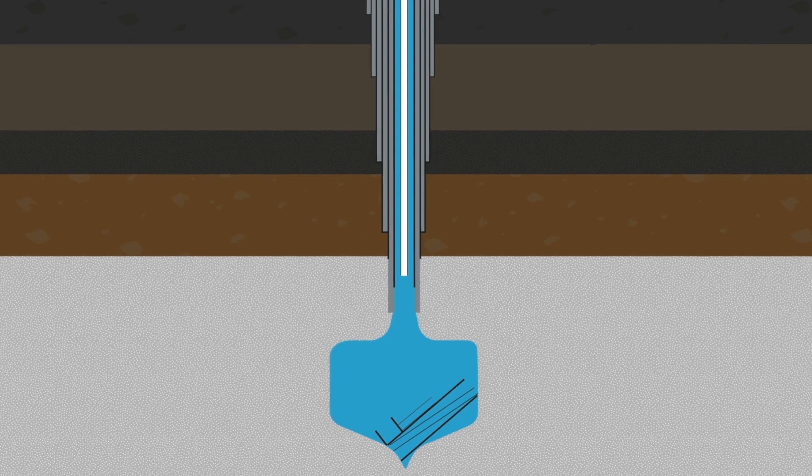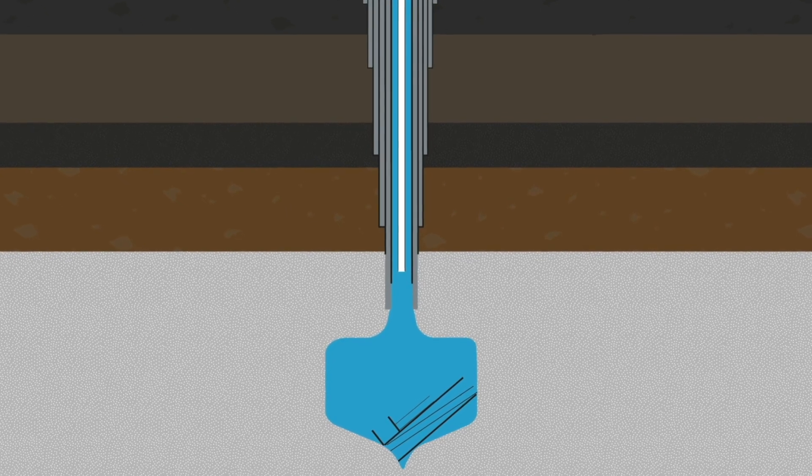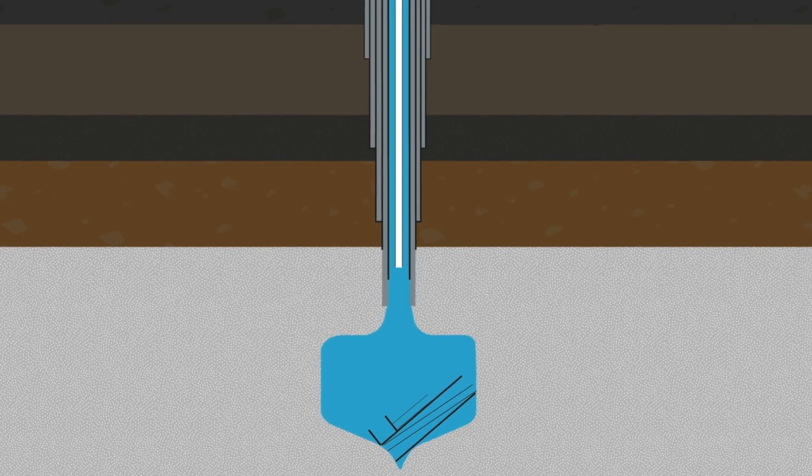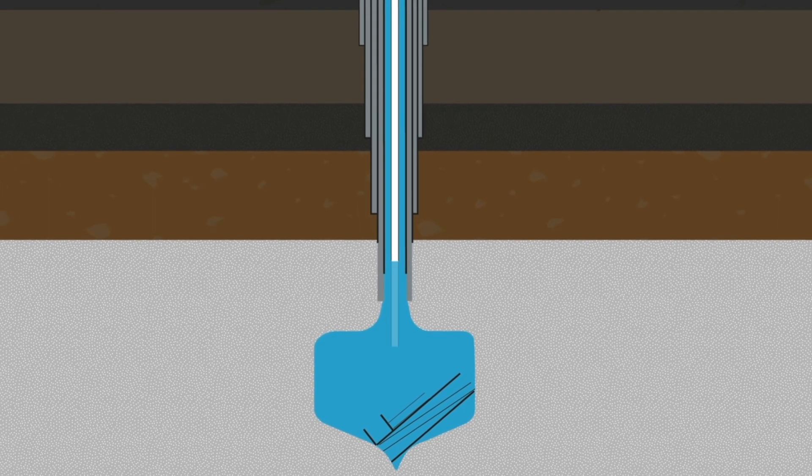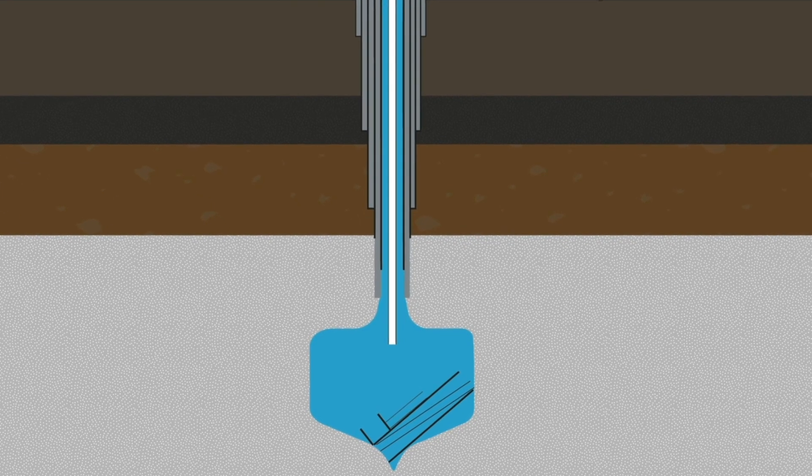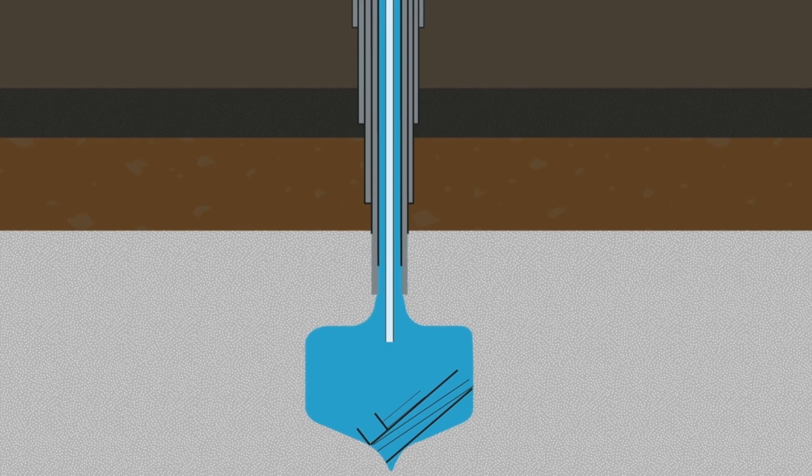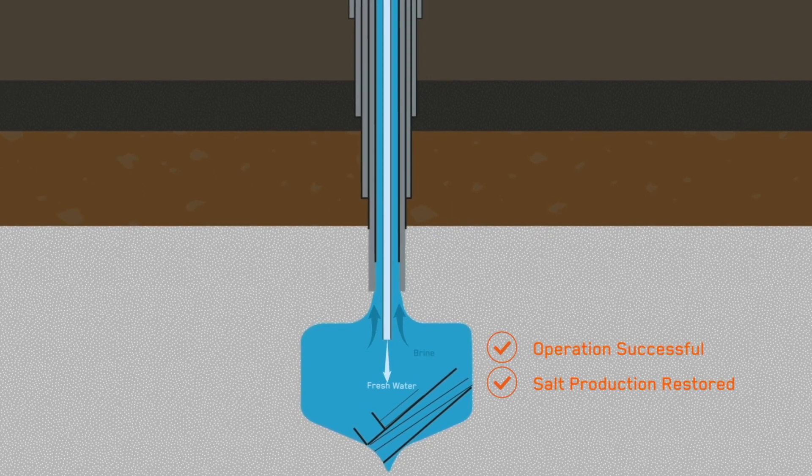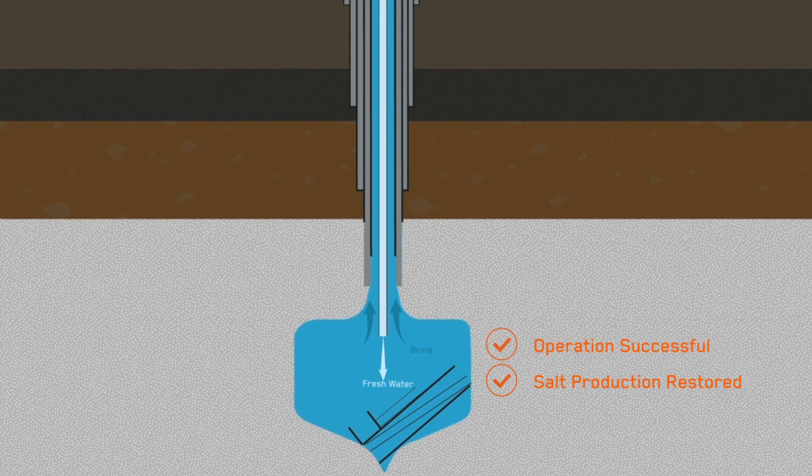By providing critical real-time visual support throughout the operation, the casing fish were successfully relocated and the blockage to the salt cavern was successfully removed. Finally, the operator installed a liner assembly at the bottom of the 7-inch casing, enabling successful restoration of efficient salt production.